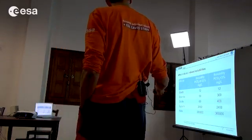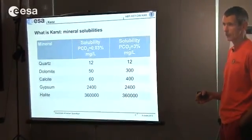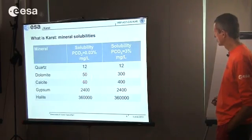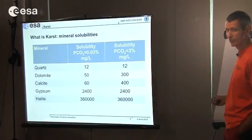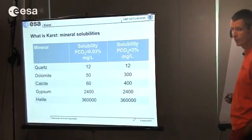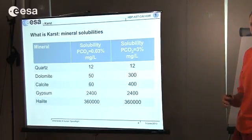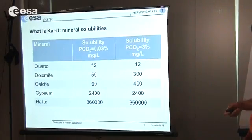These are the solubilities without CO2 and with CO2 in the atmosphere and in the water. Quartz, for example, is very slowly dissolvable — so in quartzite we can have caves, but we need a very long time and very old rocks. Dolomite and calcite, the two carbonate minerals, have very low solubility without CO2. But if we add CO2 to the water, we can get up to 300 milligrams per liter. It's still a slow process, but in geological time — about 10,000 years — it gives nice landforms.